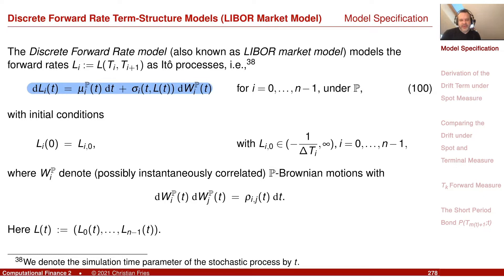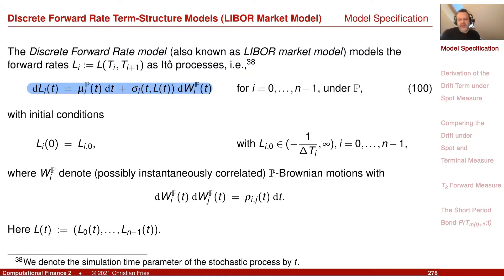The drift arises because we move to the equivalent martingale measure. Then by Girsanov's theorem, we get a change of drift. We know that certain objects are martingales under that measure, and it turns out the drift has to be a function of the covariance structure. A key question is how to efficiently calculate and implement this drift.